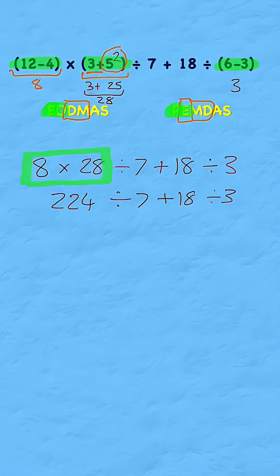Which part comes next? Well, I can see I have a division, 224 divided by 7, and that gives me an answer of 32.